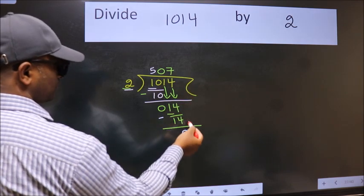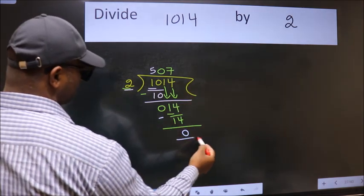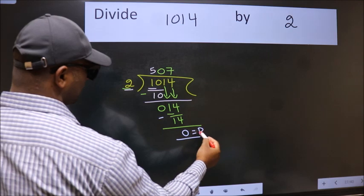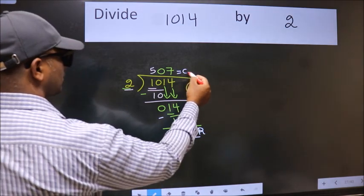No more numbers to bring down. So we stop here. This is our remainder and this is our quotient.